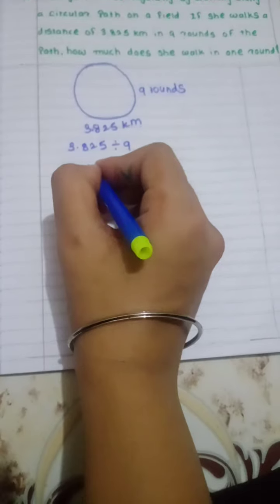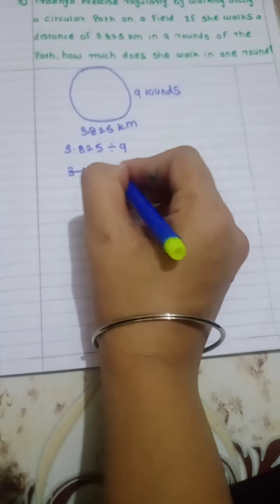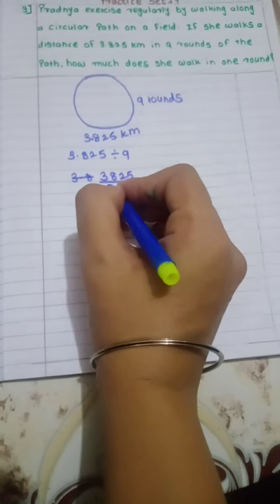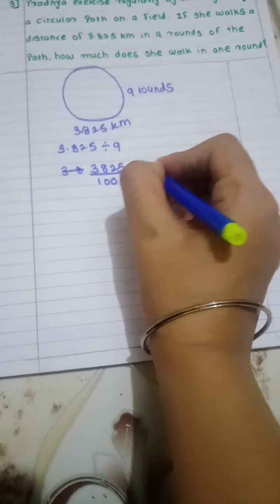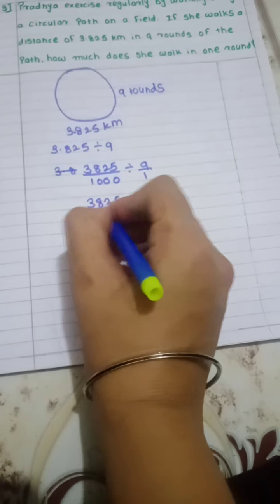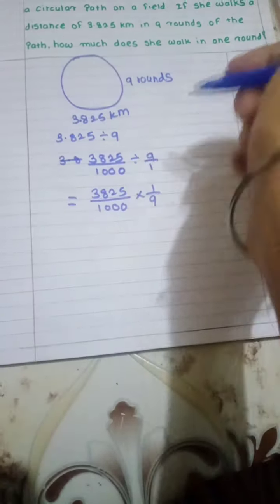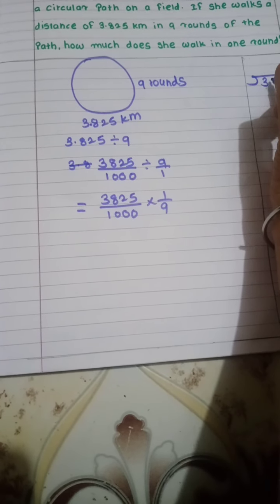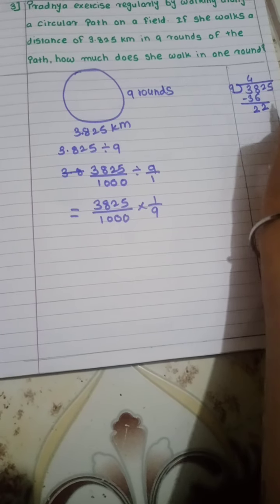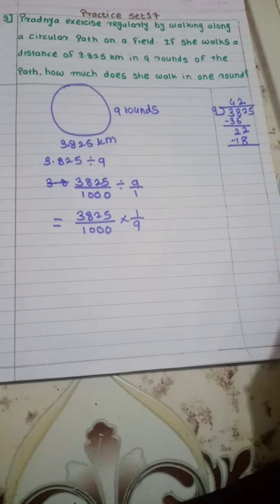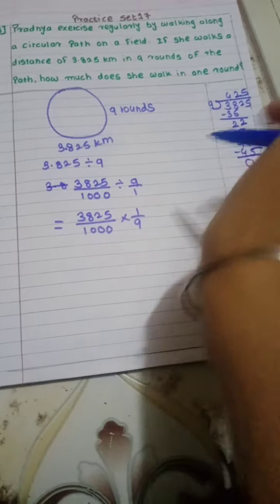So how I am going to write this? 3.825 has 3 digits after the decimal point, so I write it as 3825 divided by 1000, divided by 9 upon 1. Converting to multiplication, this becomes 3825 over 1000 multiplied by 1 upon 9. Now I divide 3825 by 9. Working through: 9 × 4 = 36, 38 minus 36 = 2; bring down 2 to get 22, 9 × 2 = 18, 22 minus 18 = 4; bring down 5, 9 × 5 = 45. The answer is 425.